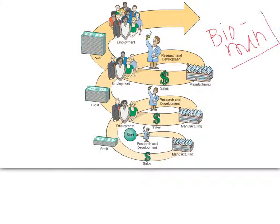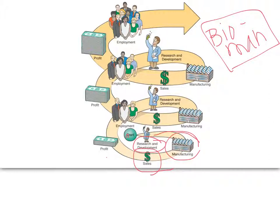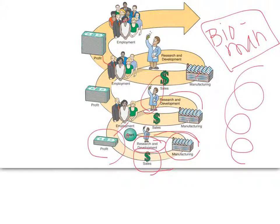This is how biomanufacturing and biotechnology work as a business cycle: it starts with someone having an idea. If the idea proves good, they start manufacturing and making the product, sell it, and make money. As they make money, the company grows, employs more people, and they put some of the profit back into research and development. Then they manufacture more, make more money, and it keeps growing — the idea is that things can get bigger and more people can be employed.